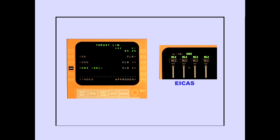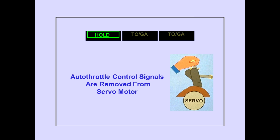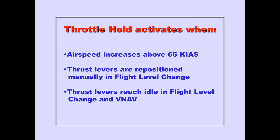Thrust limits are activated from the FMS-CDU. The selected limit is shown on the ICAS display. When throttle hold is active, hold is displayed on the PFDs and autothrottle control signals are removed from the thrust lever servo motor, preventing the autothrottle from moving the thrust levers. Throttle hold activates when airspeed increases above 65 knots during takeoff, when the thrust levers are manually repositioned in flight level change, and when the thrust levers reach idle in flight level change and VNAV.